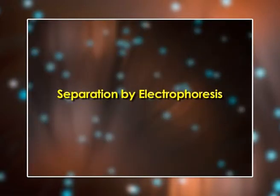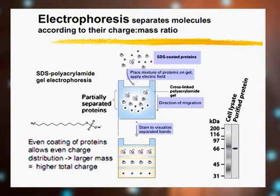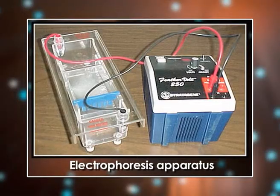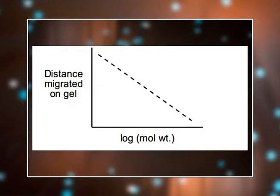Separation by electrophoresis relies on differences in the migration of charged molecules in a solution when an electric field is applied. It can be used to separate proteins on the basis of their size, shape or charge. Electrophoresis is often used to determine the protein composition of food products: the protein is extracted from the food into a solution, which is then separated using electrophoresis. Sodium dodecyl sulfate polyacrylamide gel electrophoresis (SDS-PAGE) is used to determine molecular weight by measuring relative mobility (Rm) and comparing it with a calibration curve produced using proteins of known molecular weight.